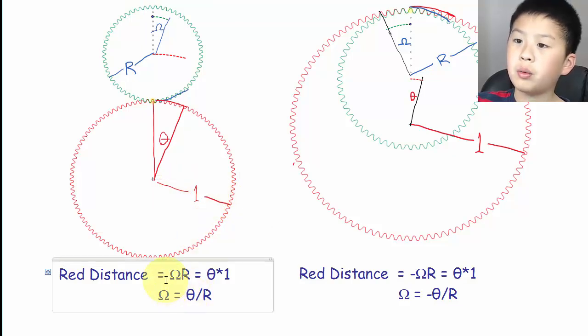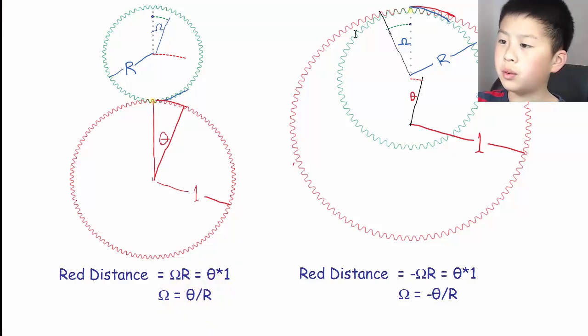So you can see that omega times r is equal to theta times one. And if you wanted to find out what omega is, you would move the r over and it would be omega is equal to theta divided by r.